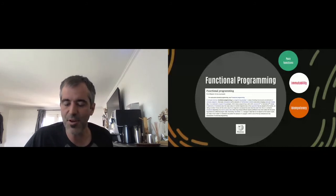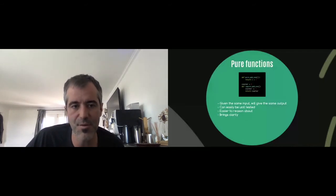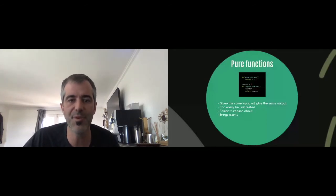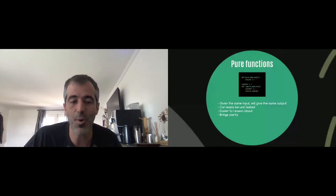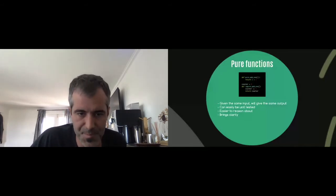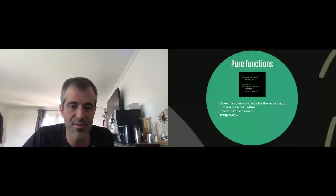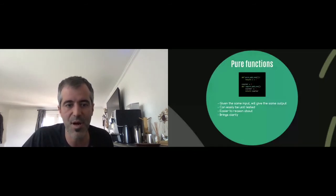I'll talk about three core principles of functional programming. The first is the idea of pure functions. In functional programming, you author functions that are pure — meaning they don't have side effects. If you give the same input to the function, you're guaranteed to get the exact same output. This is nice because it makes it easier to reason about these functions; they can be easily unit tested and it brings clarity to the process in general.